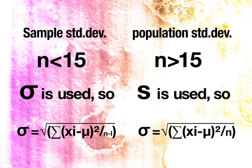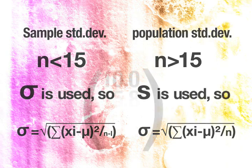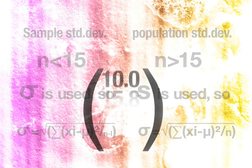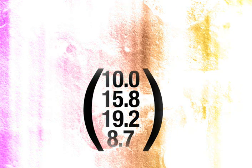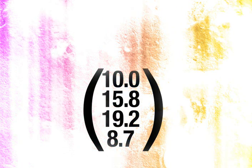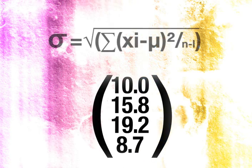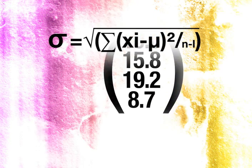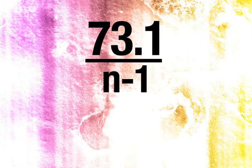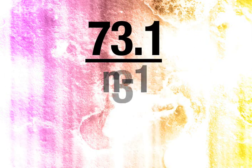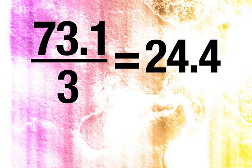So, if we have four observations at 10.0, 15.8, 19.2, and 8.7, and we wanted to work out the standard deviation of these figures, we would use the sample standard deviation equation with n minus 1. Alternatively, you can use your calculator or Excel to work it out.